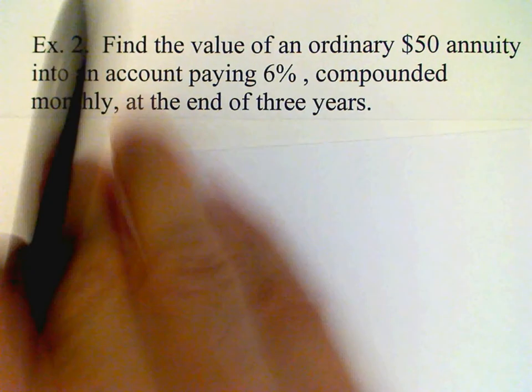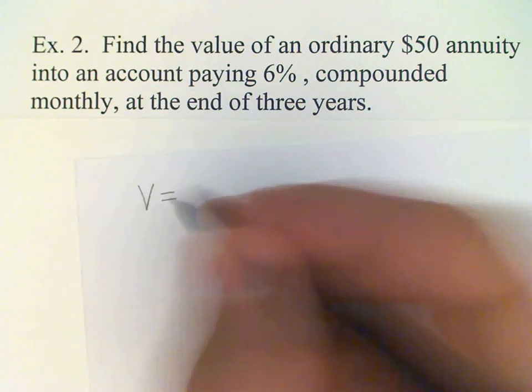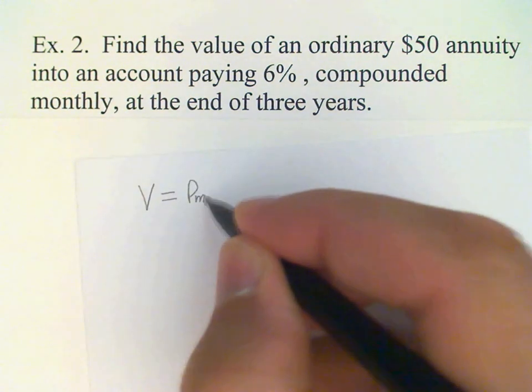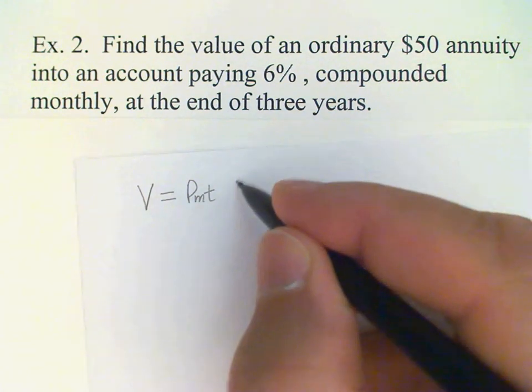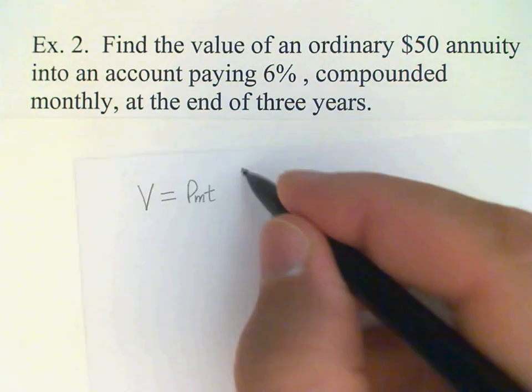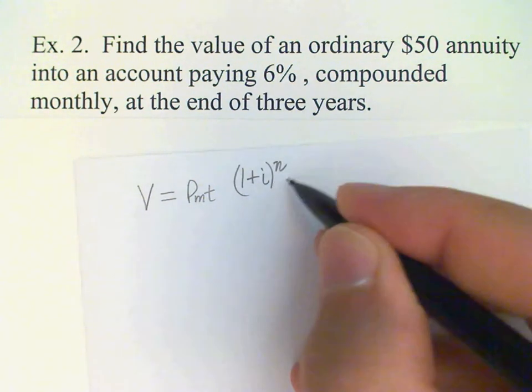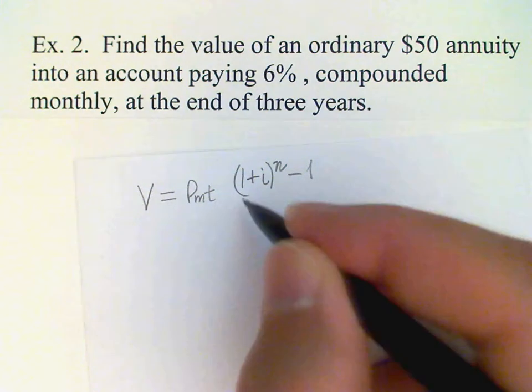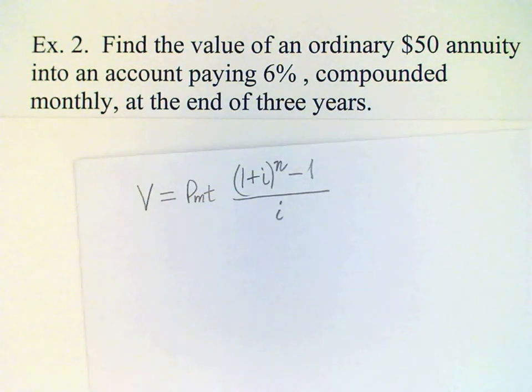Let's write down our formula. The value of the annuity is the payment times the annuity factor which is 1 plus I raised to the N minus 1 divided by I. So in order to use this formula we're going to need to know what N and I are.